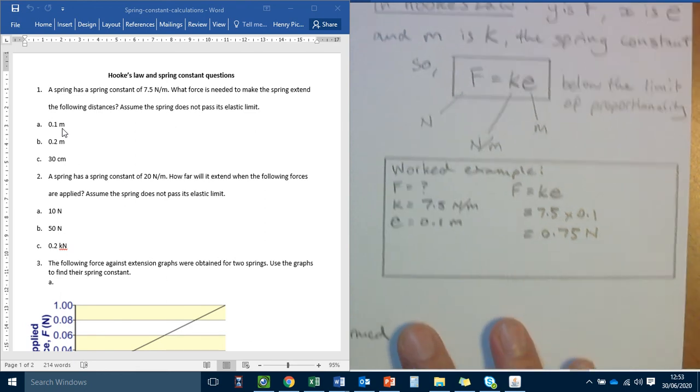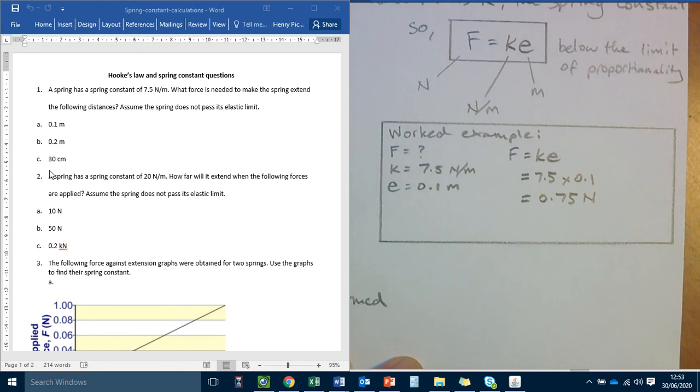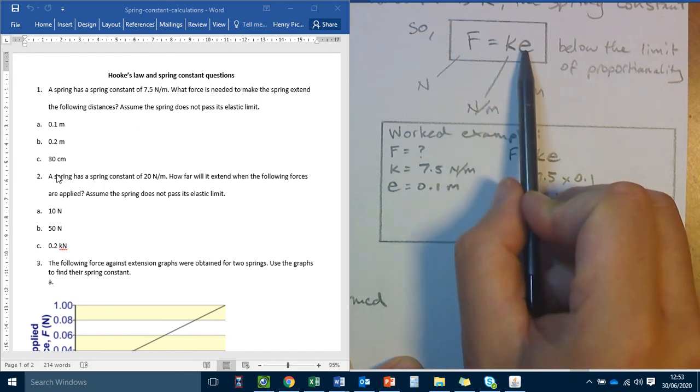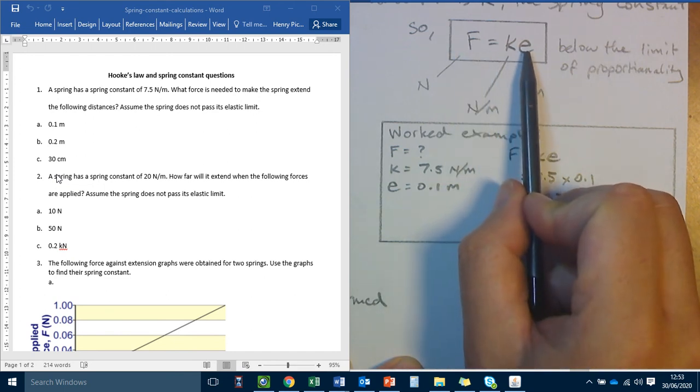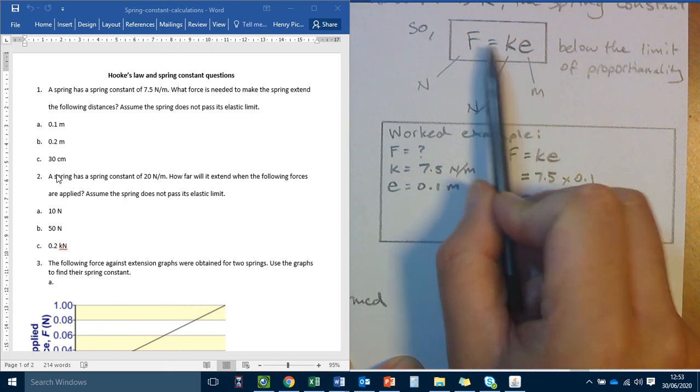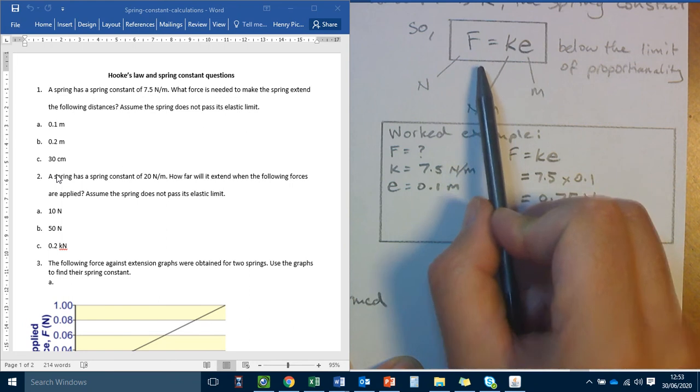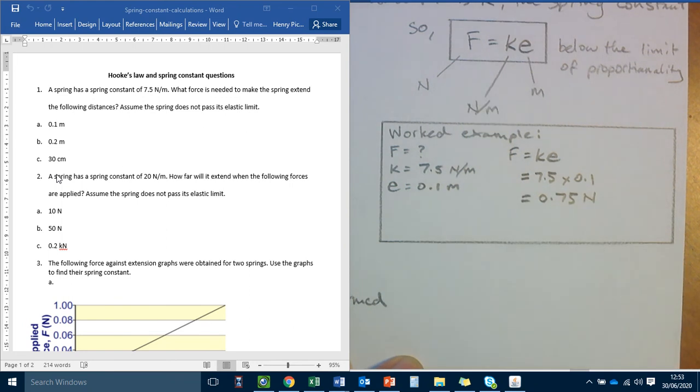Final thing, then, if you had to work out, for example, the extension, which we have in question two, then we will need to rearrange this equation. So we can rearrange the equation using algebra, and we can say to leave E on its own, making it the subject. We need to divide this side by K. And if we divide this side by K, we've got to divide this side by K. So E equals F divided by K. That's the proper way of doing it.